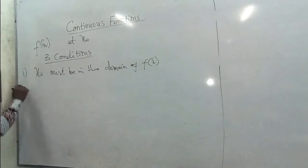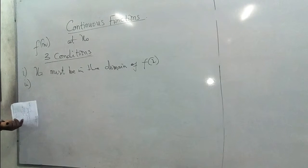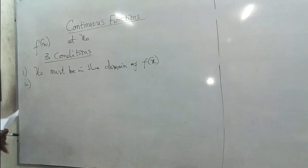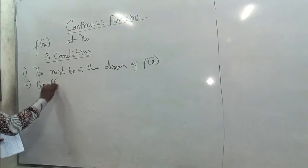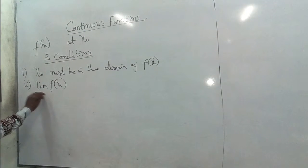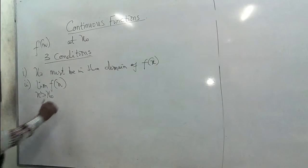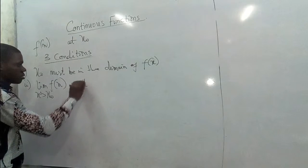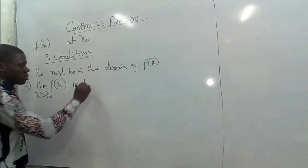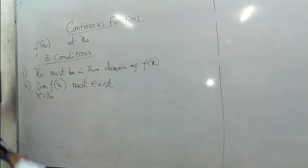The second condition is that the limit of F of x as x approaches x naught must exist.